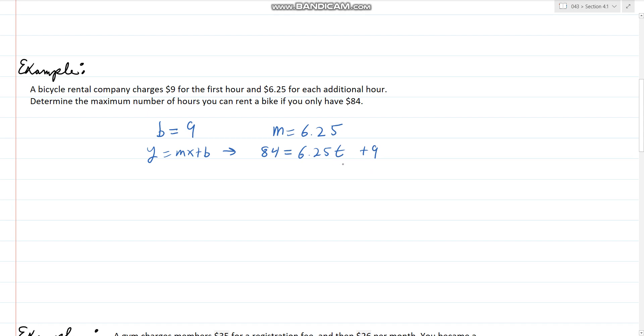Now we can solve for t. We subtract 9 from both sides and get 75 equals 6.25t. We'll divide both sides by 6.25 and we get t equals 12. Well, is that the final answer? No, because it was $9 for the first hour, which means we already had the first hour right there. So we have to add one. This would be 13 hours.